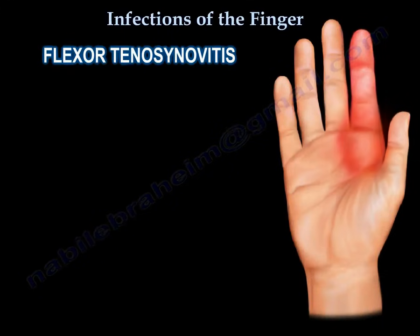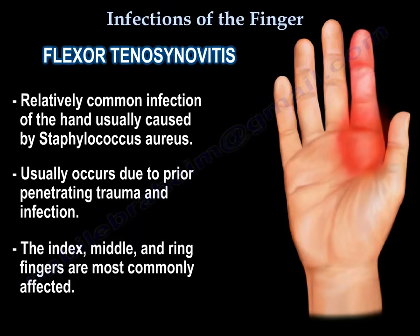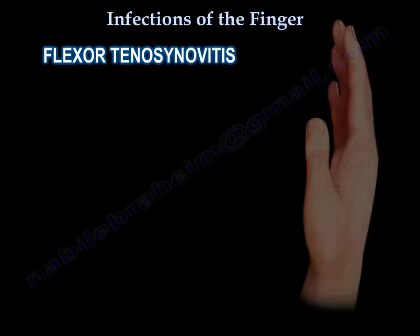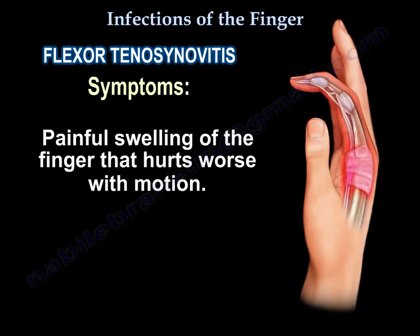Flexor tenosynovitis is a relatively common infection of the hand, usually caused by Staphylococcus aureus. It usually occurs due to prior penetrating trauma and infection. The index, middle, and ring fingers are most commonly affected. Symptoms include painful swelling of the finger that hurts worse with motion.